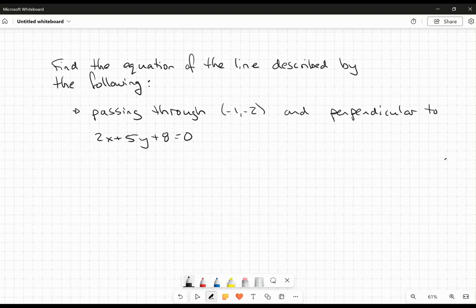Okay, hey everybody. In this video here, we're going to do a little bit of coordinate geometry. We're going to find the equation of the line that passes through the point (-1, -2) and is perpendicular to the line 2x + 5y + 8 = 0.